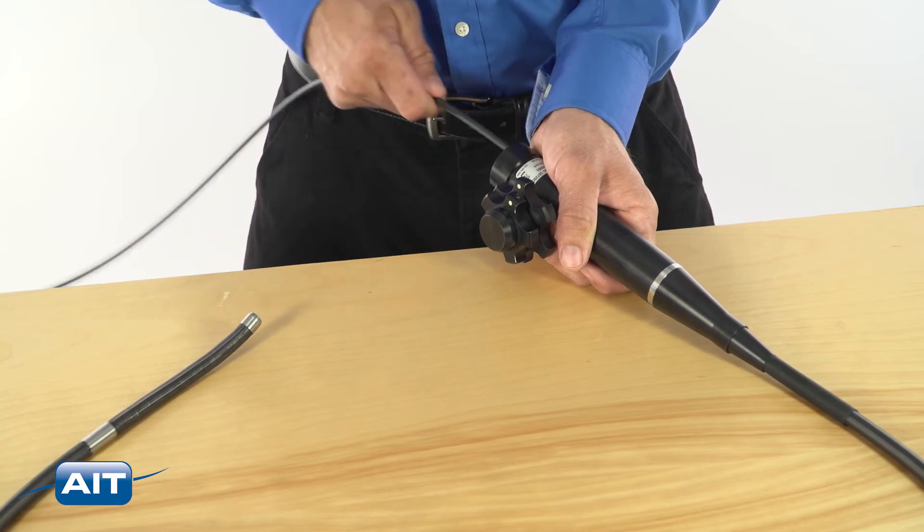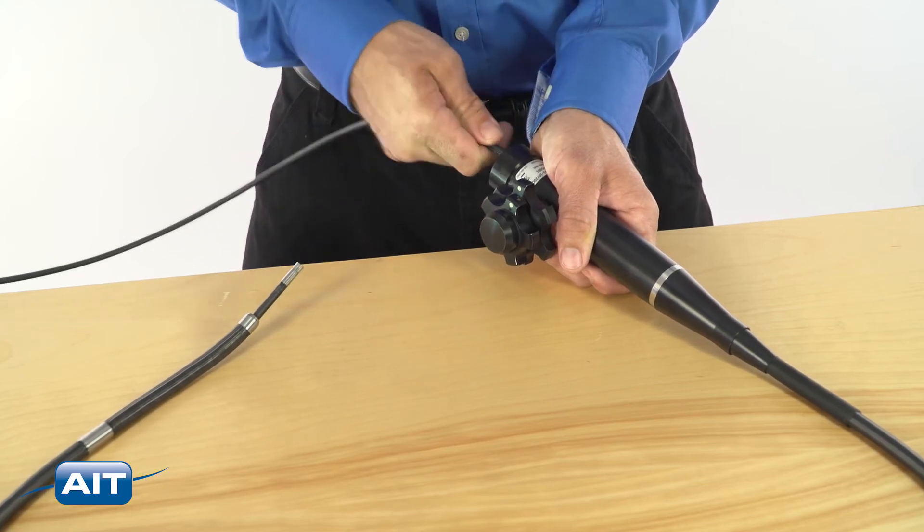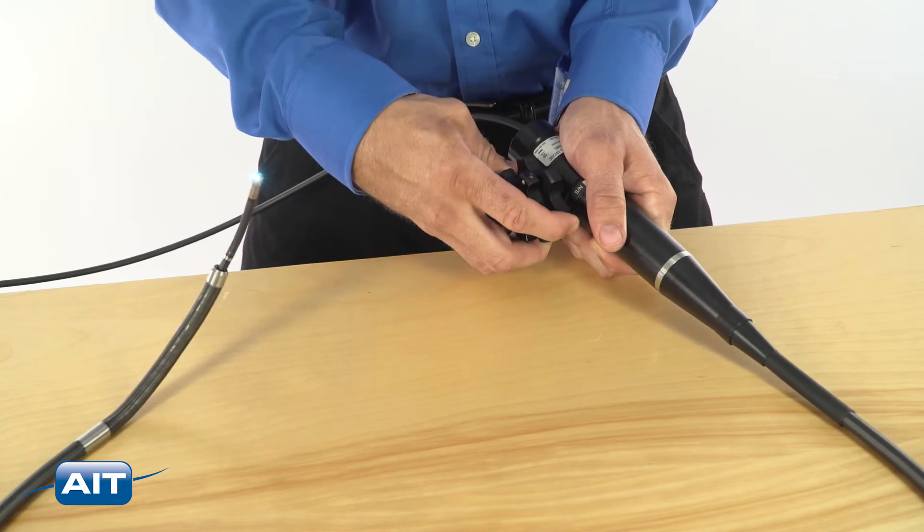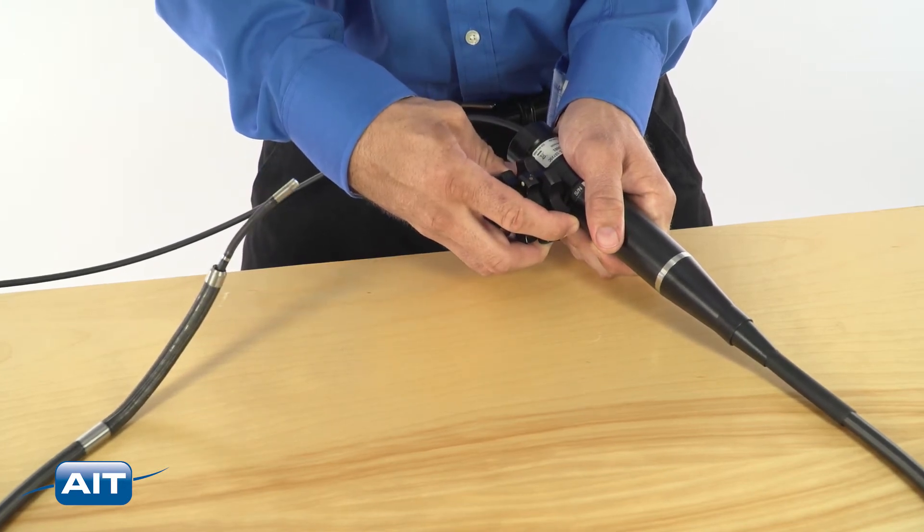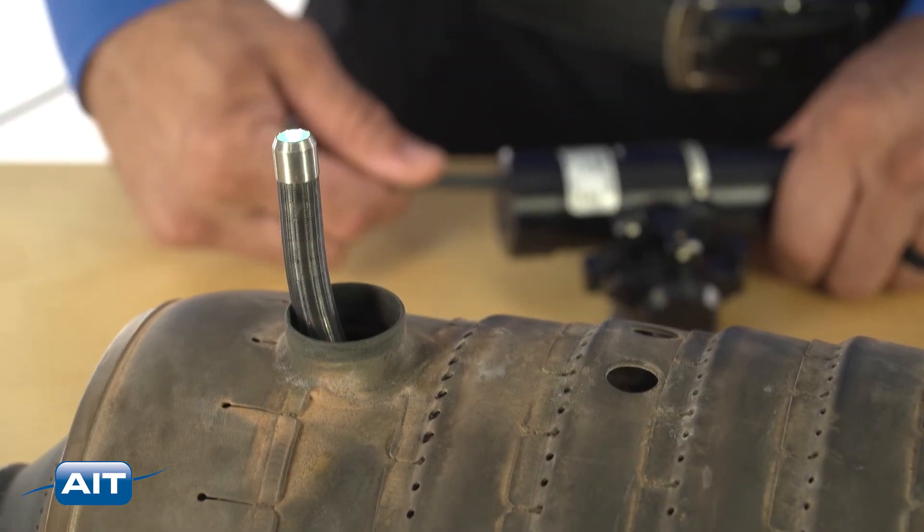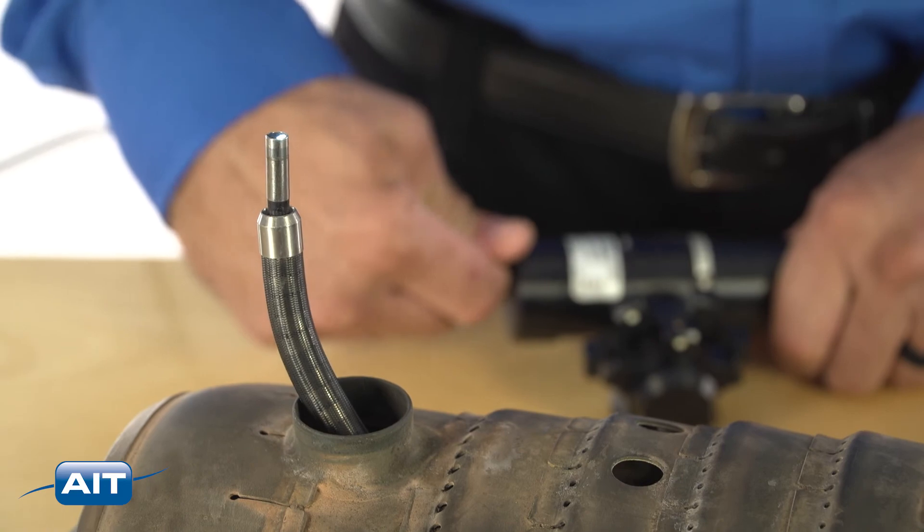Articulating guide tubes are also available to assist with more complex borescope inspections and direct a flexible borescope around complex passageways. Articulating guide tubes can accommodate most flexible borescope diameters and are available in lengths up to 6 meters.